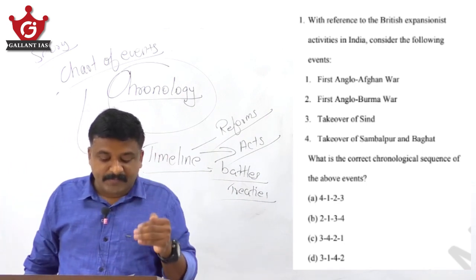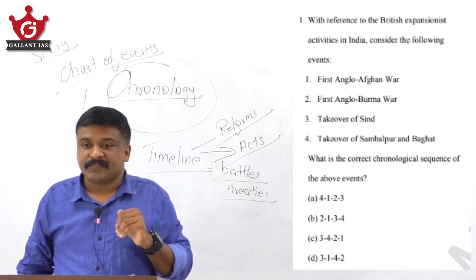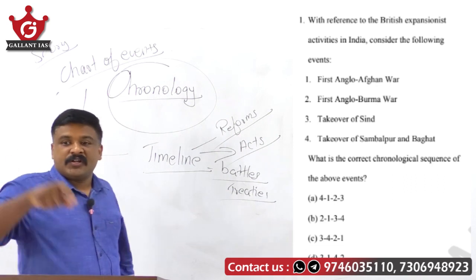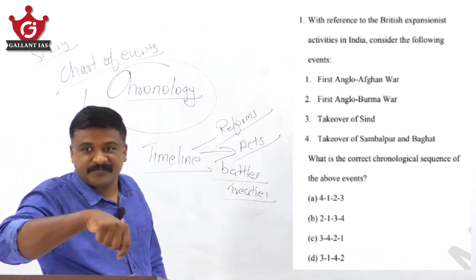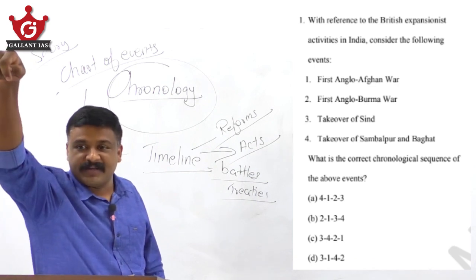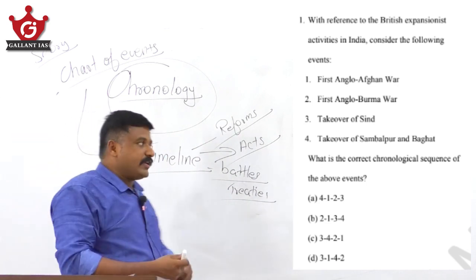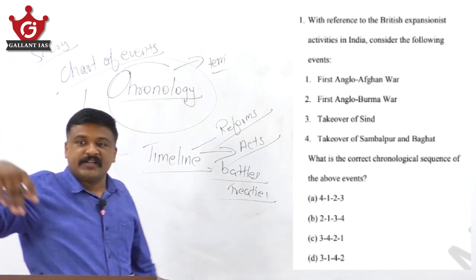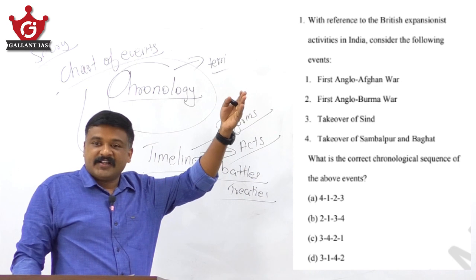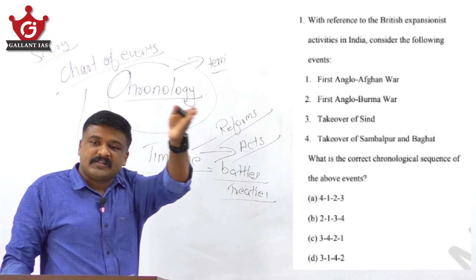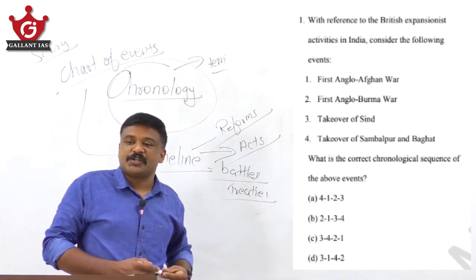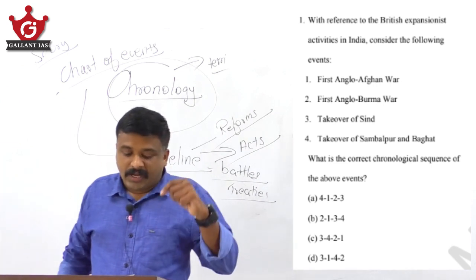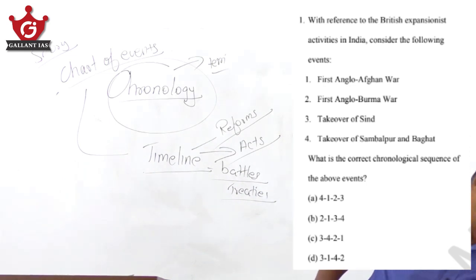Coming to the chronology question: First Anglo-Afghan War, First Anglo-Burmese War, takeover of Sindh, Sambalpur, and Jhansi — these were annexed by Dalhousie, who said your adopted son cannot be the next ruler if adoption is not accepted by the British East India Company. So British annexed Indian states by territorial annexation, military conquest, the Doctrine of Lapse, the policy of ring fence, and subsidiary alliance policy. Annexation of Sambalpur was by applying the Doctrine of Lapse.